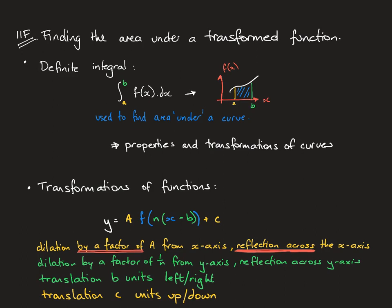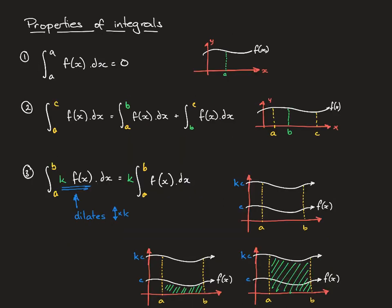Let's have a look at what happens when we do some transformations of functions, and the changes that makes to the area under the curve. Here are the properties of integrals we looked at last time, and this time we're going to think of them in terms of area under a curve. The integral from a to a of f of x is no area at all — it's as thin as a point, so the area is zero.